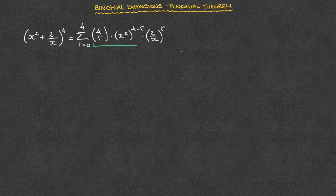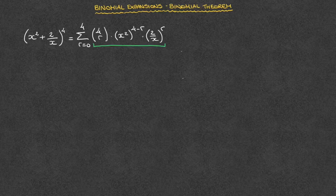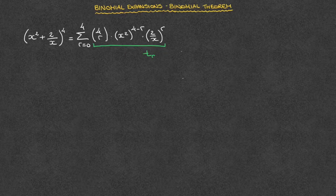The expression that I'm currently underlining in green is the general term of our expansion. If you've been watching the previous tutorials, you'll know that I like to call it t sub r, or t of r. Every single term that we'll end up with will be obtained thanks to the general term underlined in green. So the first thing we want to make sure to do is to simplify this expression as much as possible. I'll start by rewriting it.